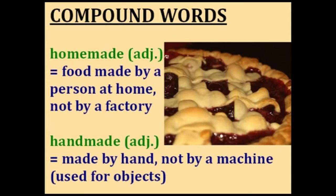How would you like some homemade cherry pie? The adjective homemade means something — usually a food — was made by a person at home, and not by a factory or big company. If you buy something in the supermarket that's already prepared, it's not homemade. But if your mother makes it at home or you make it directly from the ingredients, then it's homemade. Similar to that is handmade, which describes something made by hand, not by a machine. We usually use homemade for food and handmade for objects like clothing or decorative items.